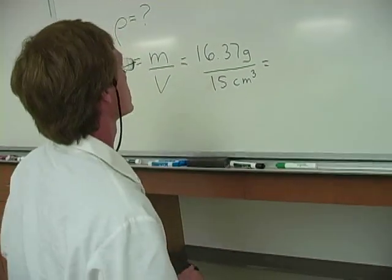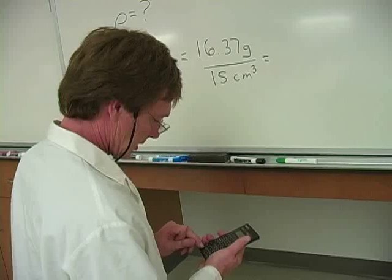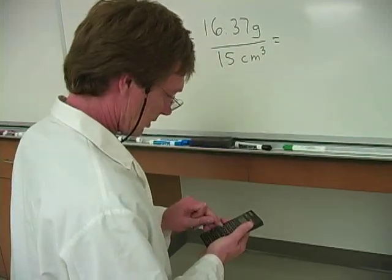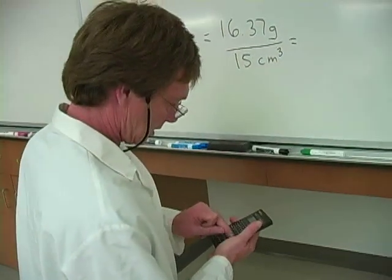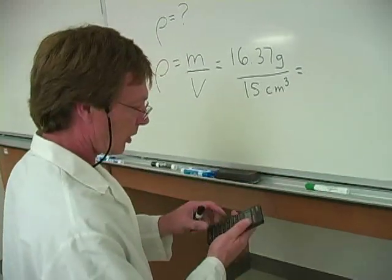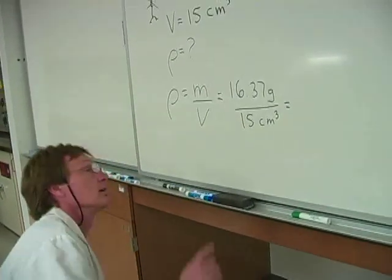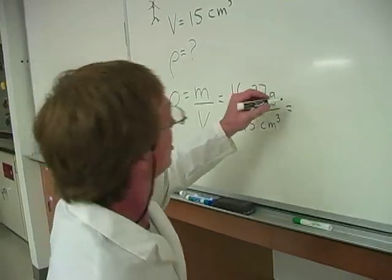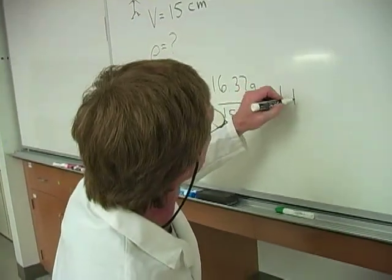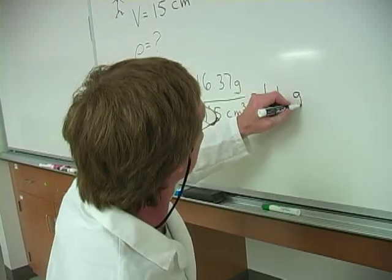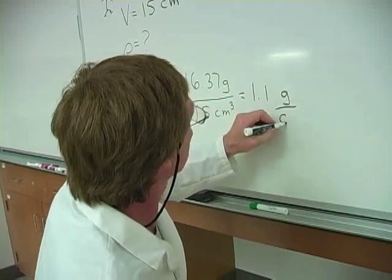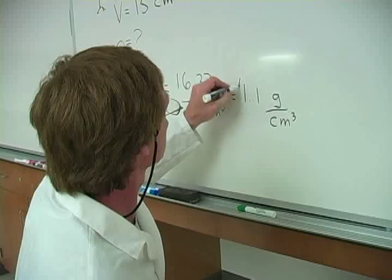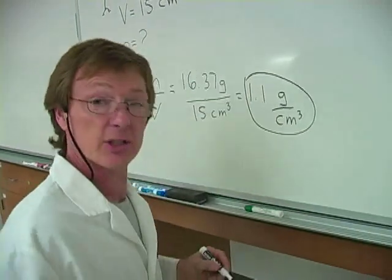So I get 1.09. Now, I've only got this bottom value, the volume, to 2 sig figs. So that's going to be 1.1 grams per centimeter cubed. So that's Geordi's density.